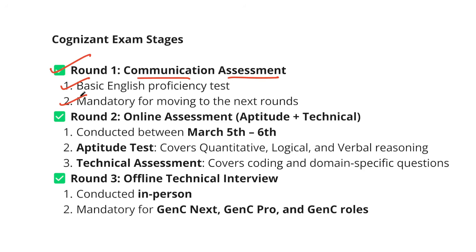Some of you mentioned over Instagram DMs and in the comment section that you were only able to attend one or two assessments — for example, someone couldn't attend aptitude because it got closed in between due to a technical issue. For those candidates, I would suggest: don't lose hope. Attempt all the assessment emails you are getting. Don't think that because you didn't get the communication link and directly got aptitude, there's no point — you should never think that way. Just attend every single assessment.